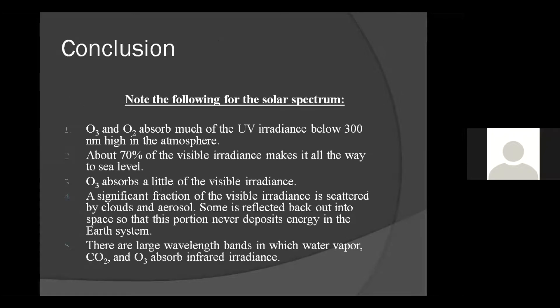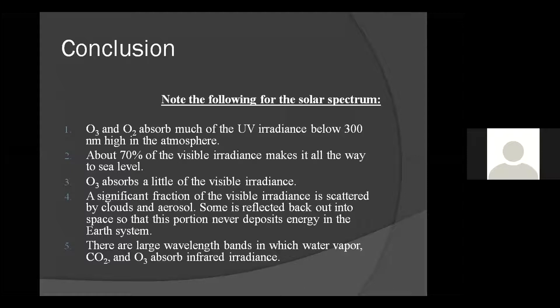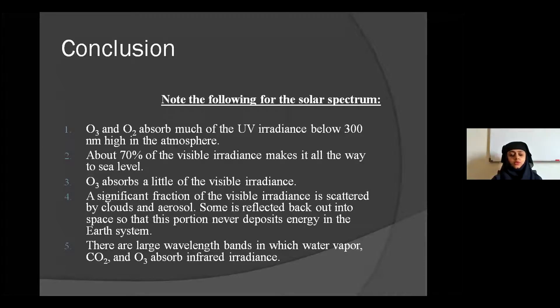Some key points for the solar spectrum: First, ozone and oxygen absorb much of the UV irradiance below 300 nanometers high in the atmosphere. Second, above 70 percent of the visible irradiance makes it all the way to sea level. Third, ozone absorbs a little of the visible irradiance. Fourth, a significant fraction of visible irradiance is scattered by clouds and aerosols — some reflected back into space, never depositing energy in the earth system. Large wavelength bands exist in which water vapor, carbon dioxide, and oxygen absorb infrared radiance.